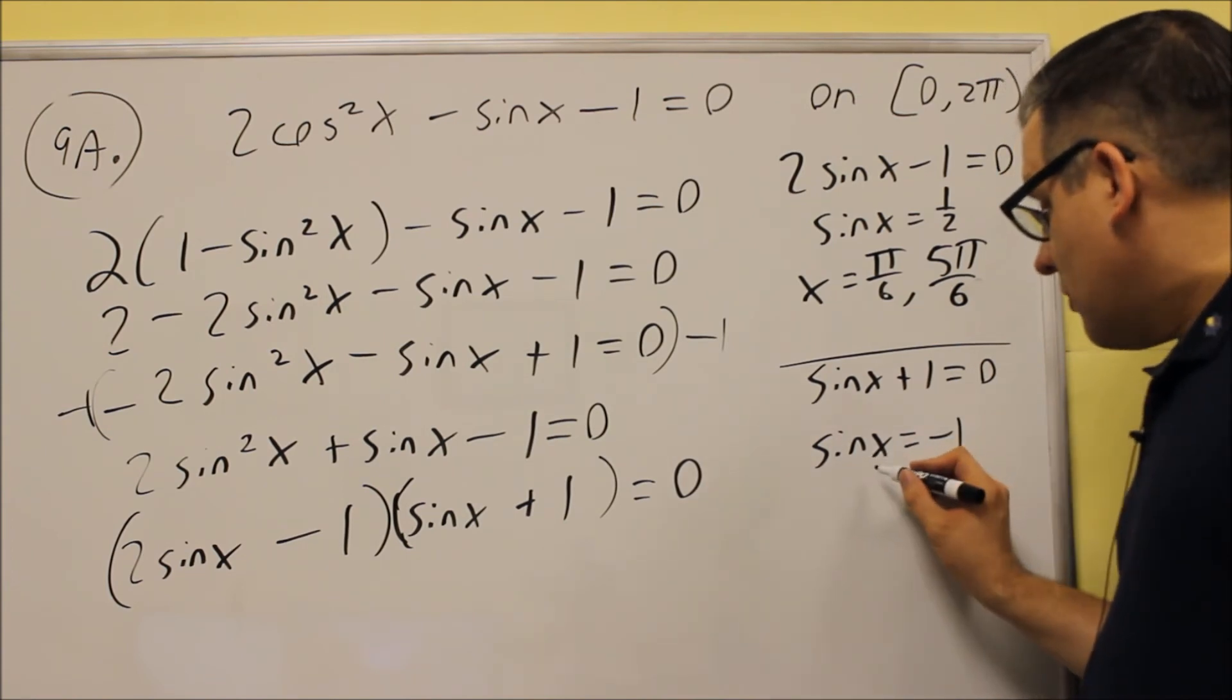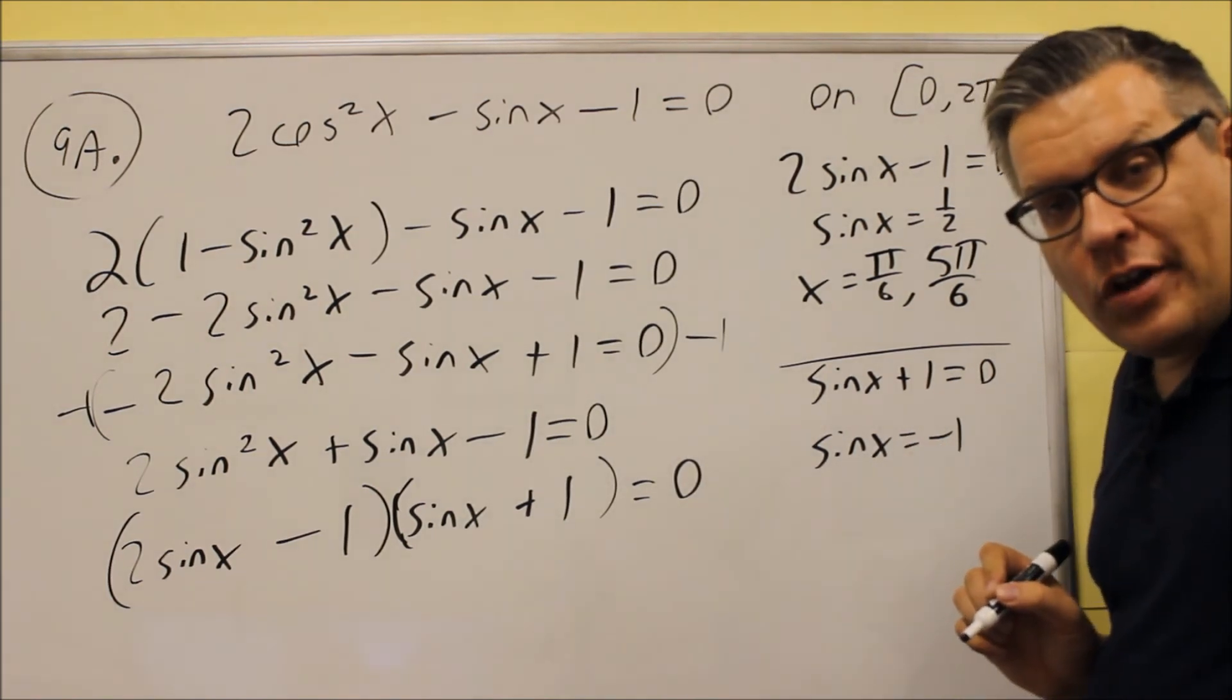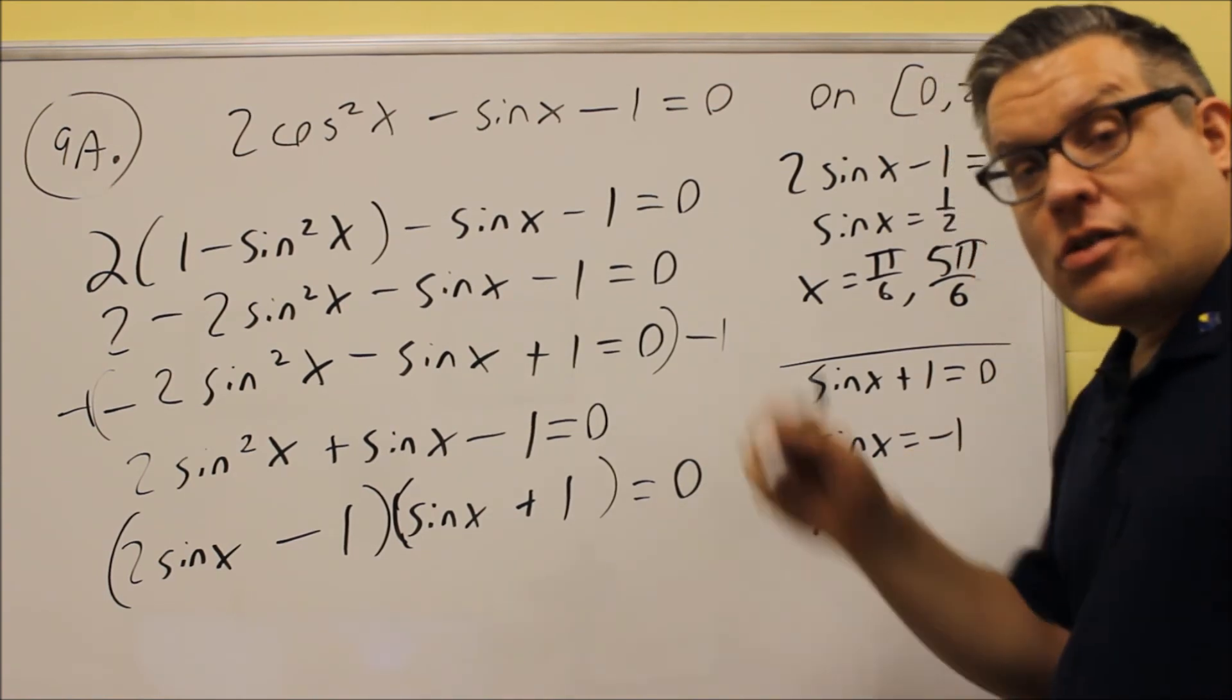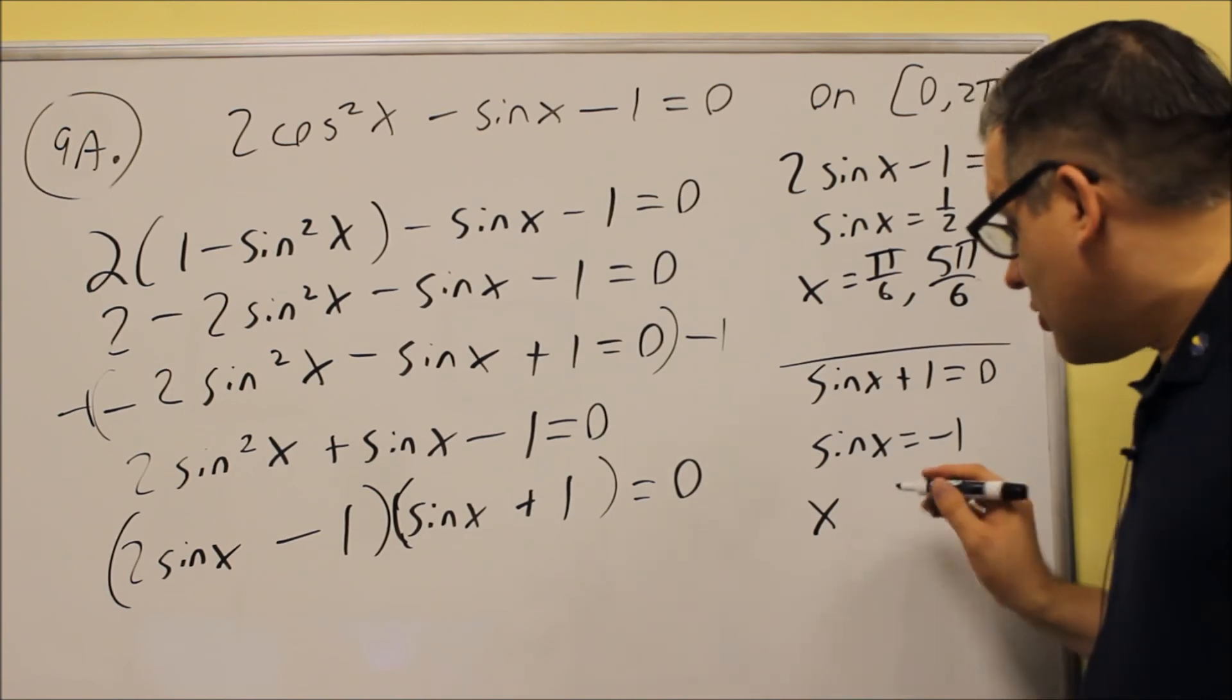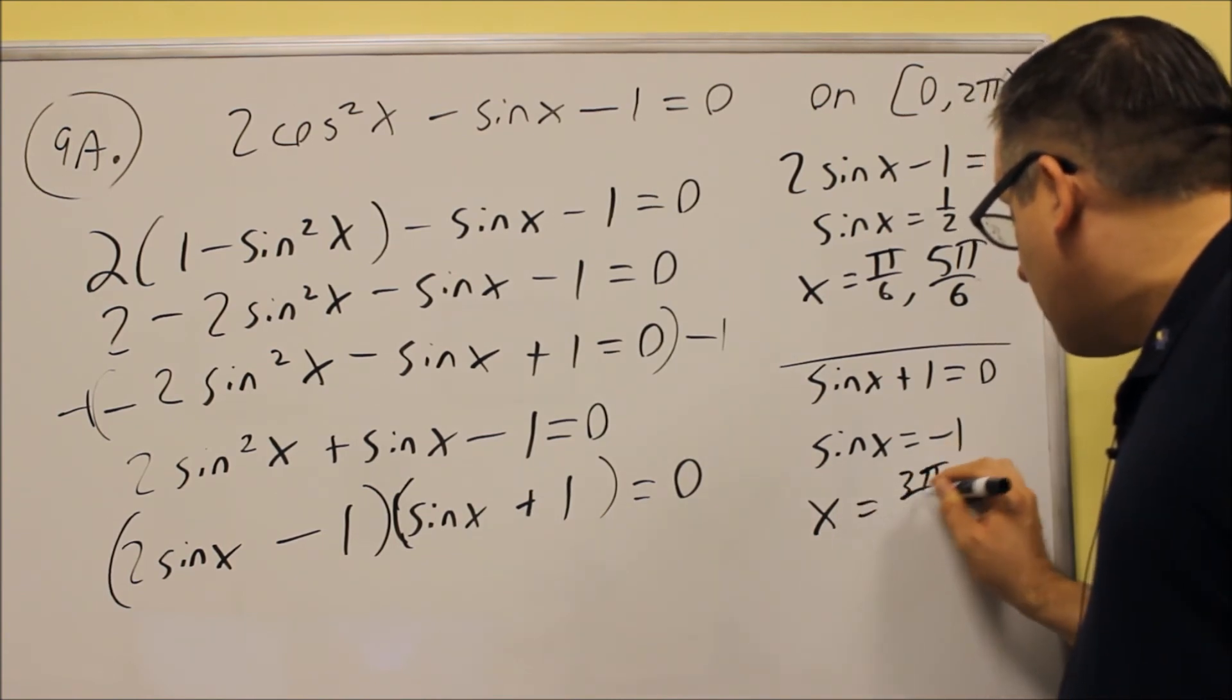Now we've got this one, sine x equals negative 1. Now negative 1, that's going to occur at the very bottom of the unit circle. That's going to be at 270 degrees, or in radians, that would be 3 pi over 2.